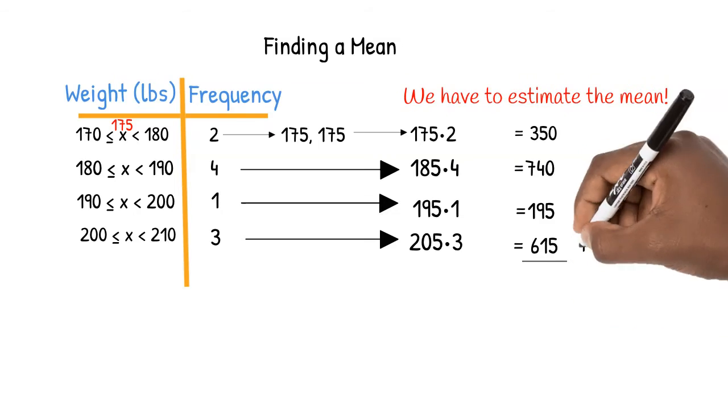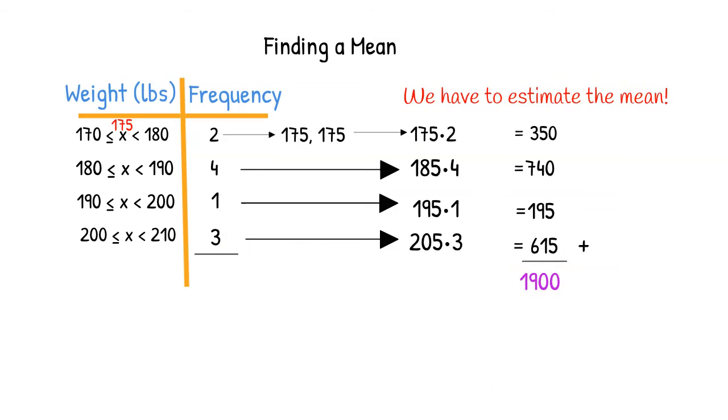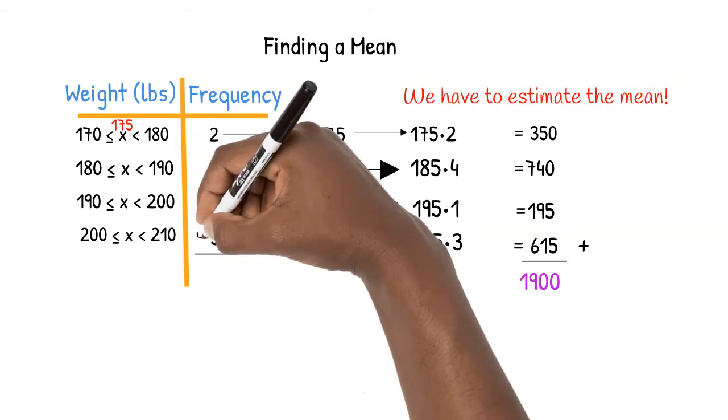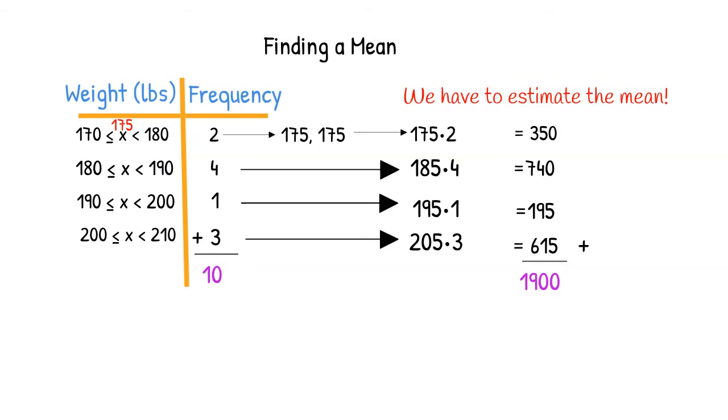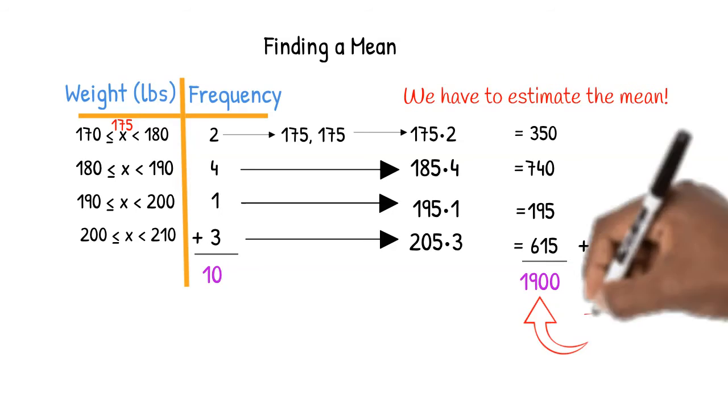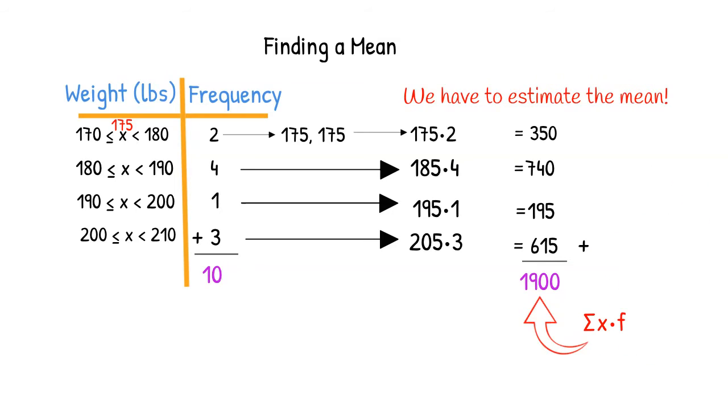The sum of all the men's weights is 1900 pounds, and in all there are 10 men. To find the mean, we use the estimates of the sum of the weights calculated by multiplying each approximate weight by its frequency, and divide this sum by the number of cases found by adding the frequencies.